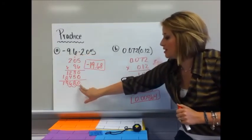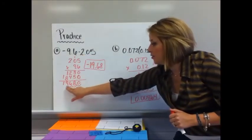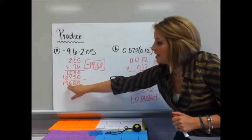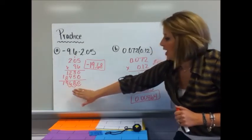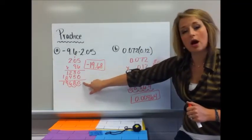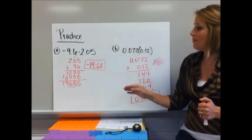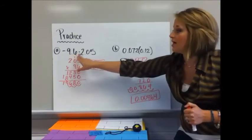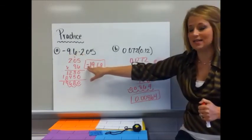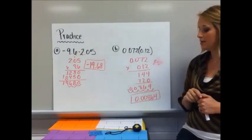So there's 1, 2, 3 decimal places so I move over 1, 2, 3 and my decimal lands between the 9 and the 6 and notice that for my final answer I dropped that last 0. It's kind of like cleaning up the number. I don't need it and I also did not forget my integer rules. I have a negative times a positive so my product is a negative 19.68.